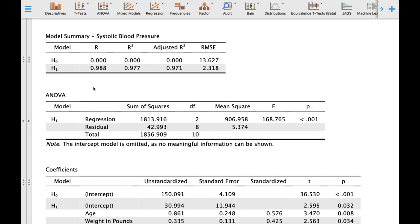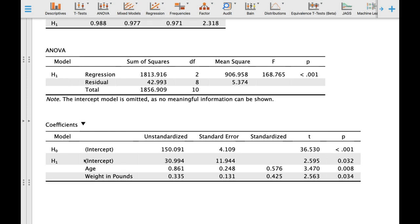Again, R-value measures the magnitude of relationship. The question now is how very high is very high? 0.977 or 97.7% in the variation of your dependent variable systolic blood pressure can be attributed to these two independent or predictor variables, age and weight in pounds.